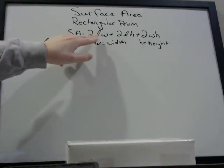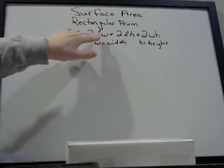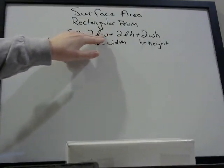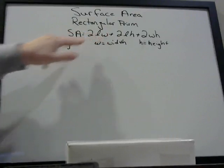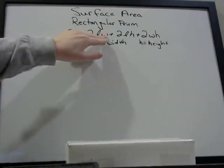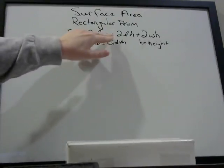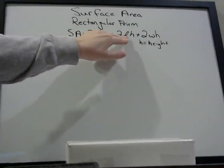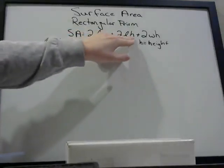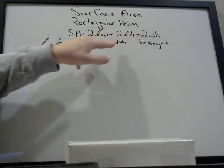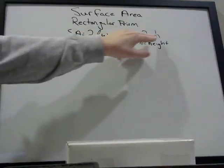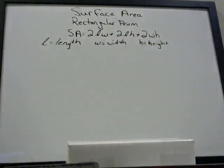SA equals 2LW. When things are written like this, that means multiplication. So 2 times L — L means length — times W. W means width, plus 2 times L, length, times H. H means height, plus 2 times W, width, times H, which is height. And so we're going to explain to you what those mean.